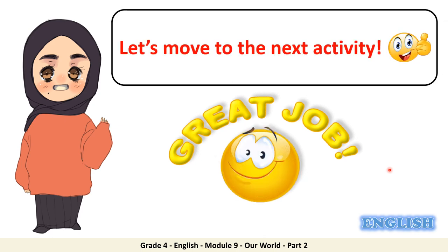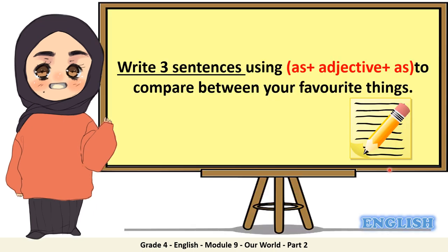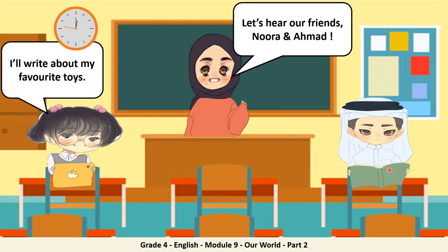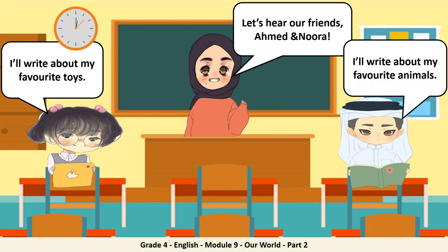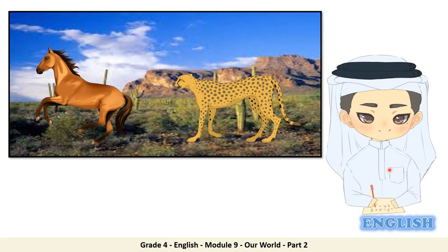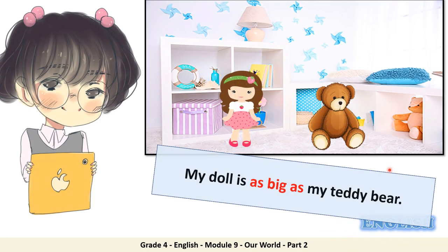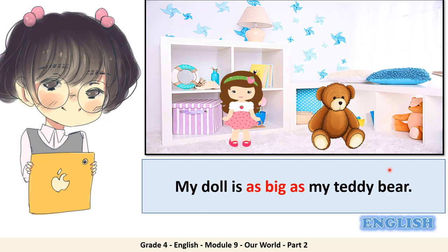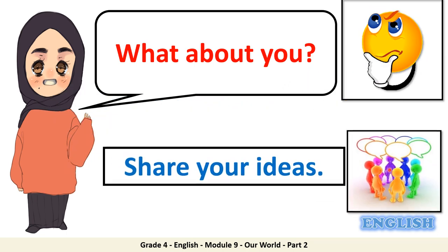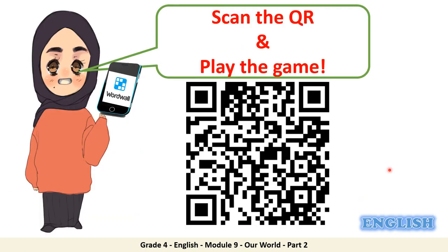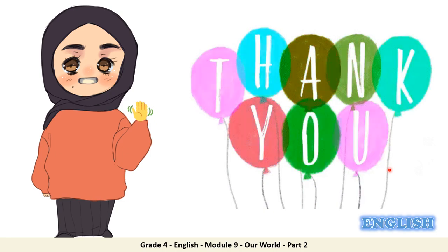Great job! Write three sentences using as plus adjective plus as to compare between your favorite things. Ahmed says: The horse isn't as fast as the cheetah. Noura says: My doll is as big as my teddy bear. Don't forget to share your ideas with your friends and teacher. You have completed all the objectives. Well done! Now scan the QR and play the game. Hope you enjoy it! Thank you for watching. See you next time! Bye!